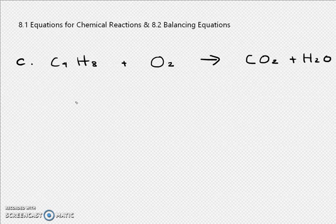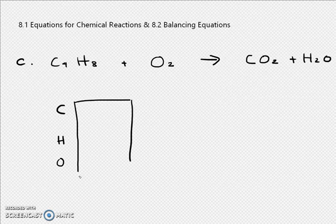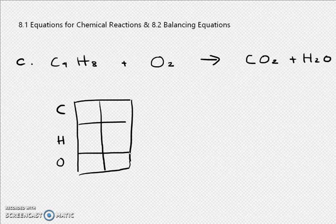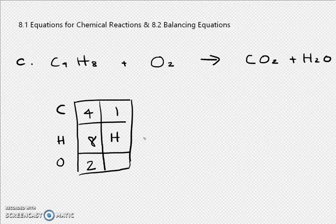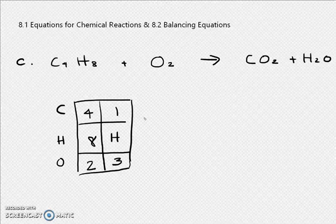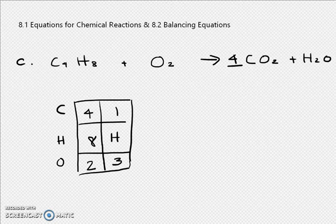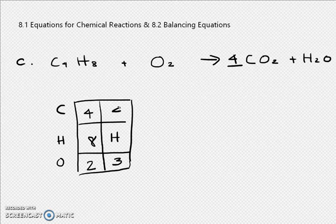You can make a little table for C, H, and O. On the left side we have 4 carbons, 8 hydrogens, and 2 oxygens. On the right side we have 1 carbon, 2 hydrogens, and 1 oxygen. If we put a 4 in front of CO2, then it becomes 4 carbons — that matches up.